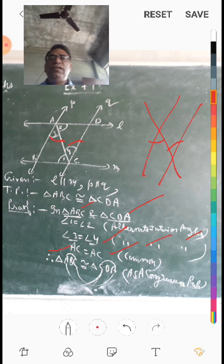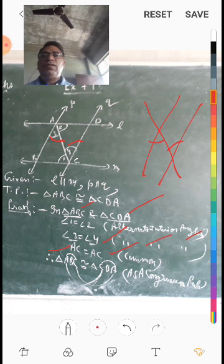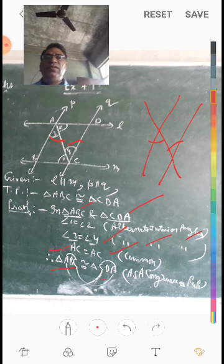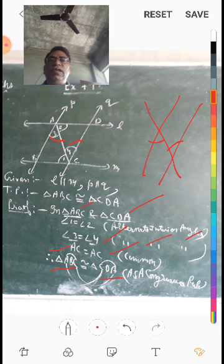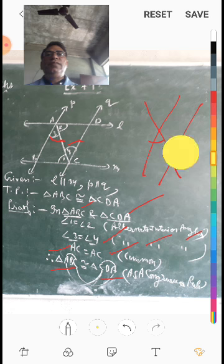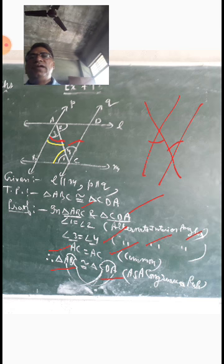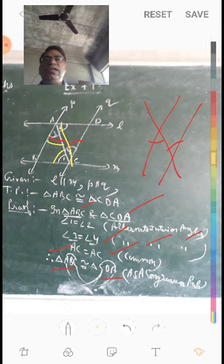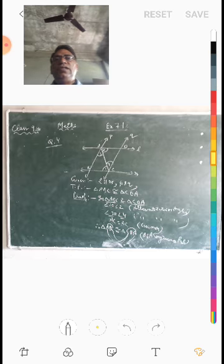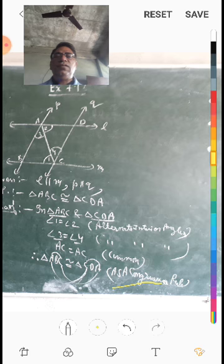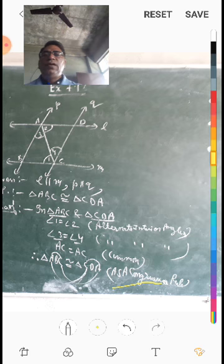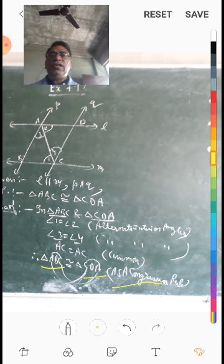AC is equal to AC (common side). Therefore triangle ABC is congruent to triangle CDA by AAS congruence. Note: writing triangle ACD instead would be wrong because the vertex correspondence must match the order in which we stated the equal angles.